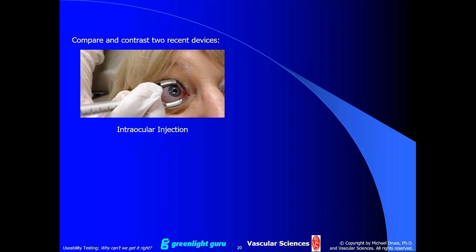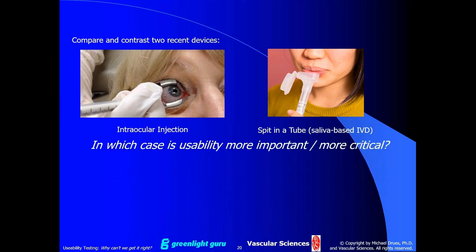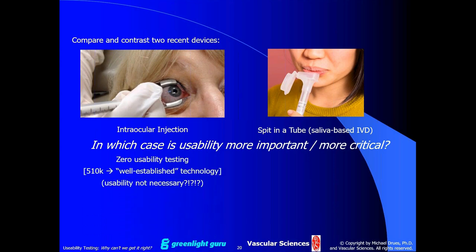In which case is usability testing more important? I would assume the vast majority of you would say usability for a device indicated for intraocular injection is obviously much more critical than for a device where you simply spit in a tube. Unfortunately, the reality is not so simple. The intraocular injection product required zero usability testing — none. The regulatory justification was that this was a 510(k), therefore well-established technology, and therefore usability testing was not necessary. On the other hand, the saliva-based device faced an extreme amount of required usability testing.